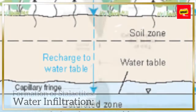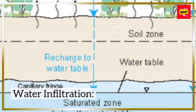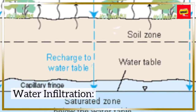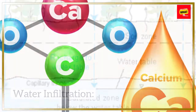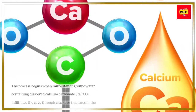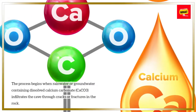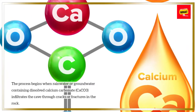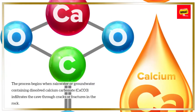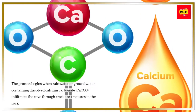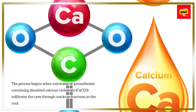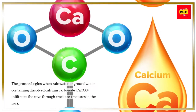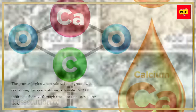Formation of Stalactites. Water Infiltration: The process begins when rainwater or groundwater containing dissolved calcium carbonate (CaCO₃) infiltrates the cave through cracks or fractures in the rock.